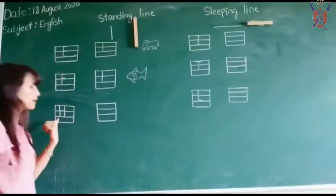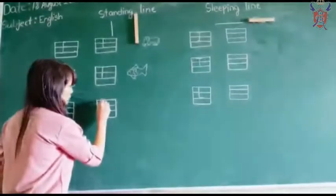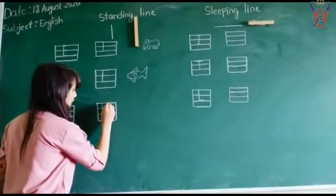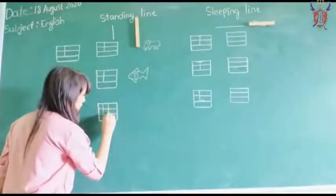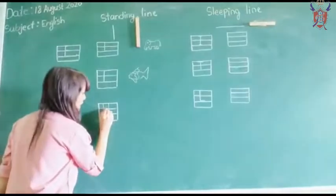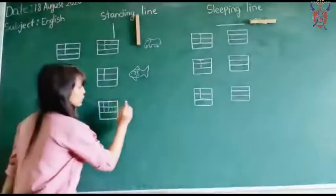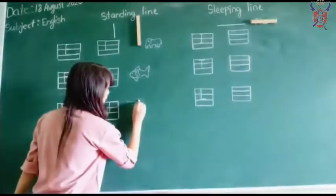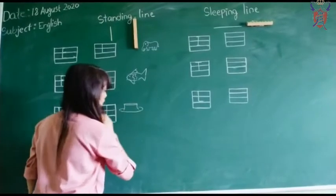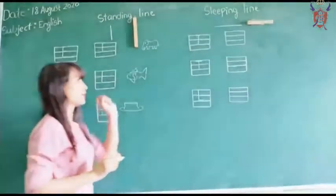Next letter is H. First you have to draw a standing line, again one more standing line you have to draw. In the middle you have to draw a sleeping line. H for head.